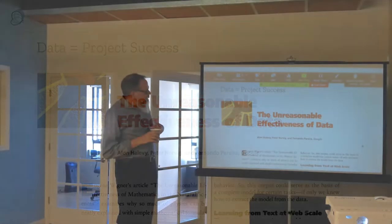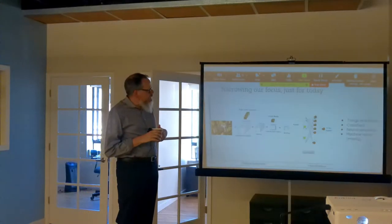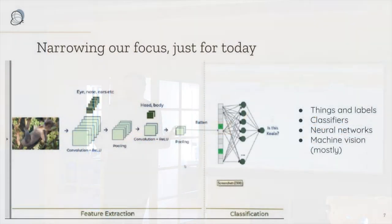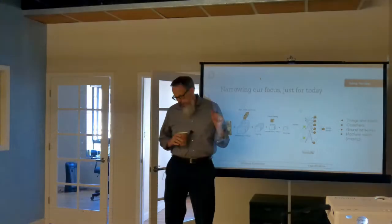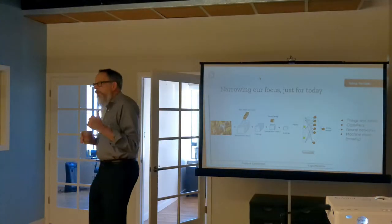Today we're going to think about low data cases. I'm going to narrow the focus to supervised learning, where you've got things and labels — for example, pictures labeled as 'is there a koala in the picture or not.' A tremendous amount of machine learning done in industry is supervised. We'll think about classification problems: is it a koala or not, a horse, cat, or dog, or is there a tumor in an image.